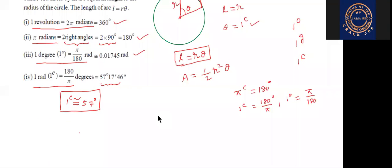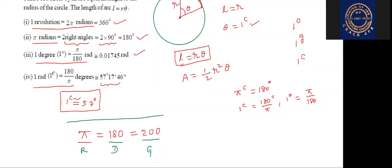Now what is the relation between these three systems? π radians = 180 degrees = 200 grades. This is the relation between radians, degrees, and grades.